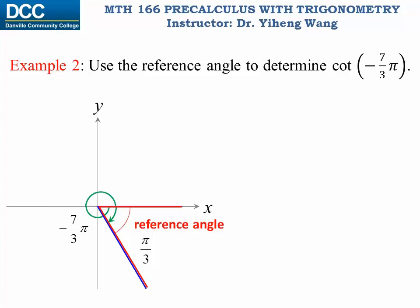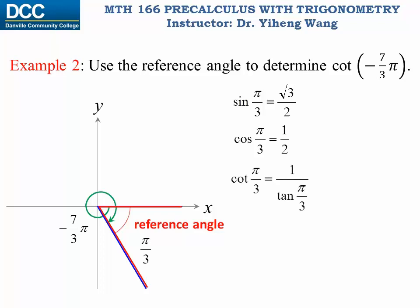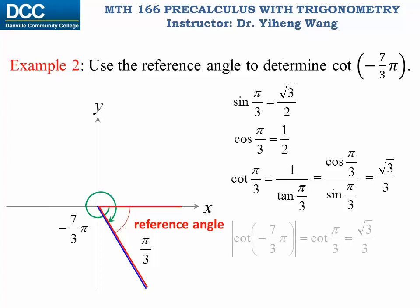Therefore we first want to determine cotangent(π/3). We may not have memorized it, but we know that sine(π/3) is √3/2 and cosine(π/3) is 1/2. Cotangent(π/3) is 1 over tangent(π/3), which equals cosine over sine. Substituting the values, cotangent(π/3) is √3/3. This indicates that the absolute value of cotangent(−7π/3) also equals √3/3.